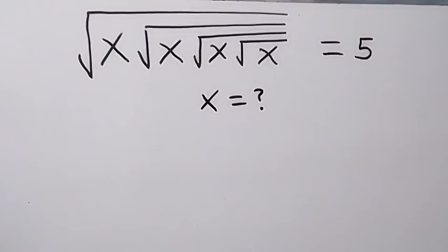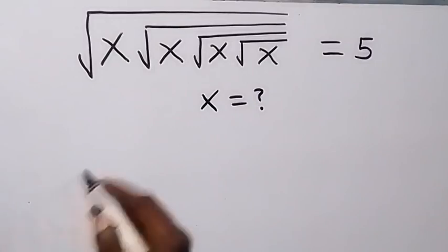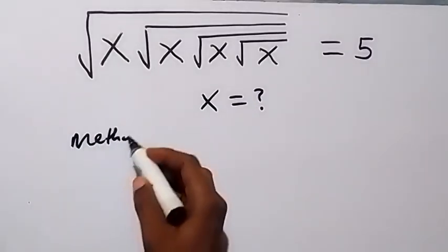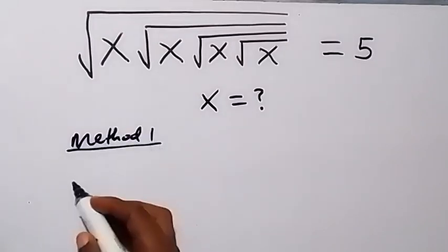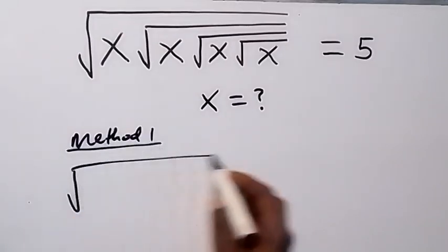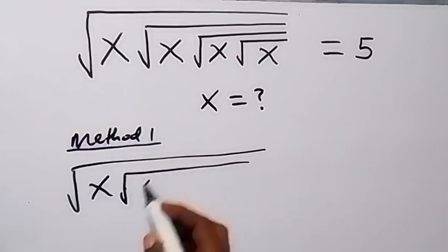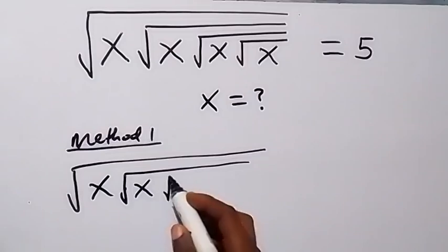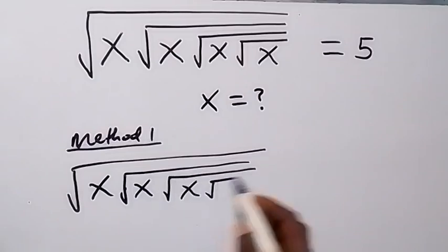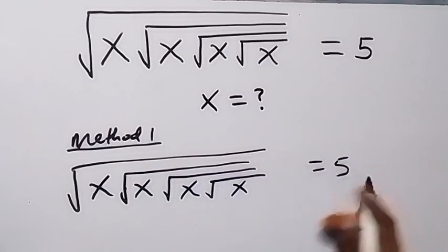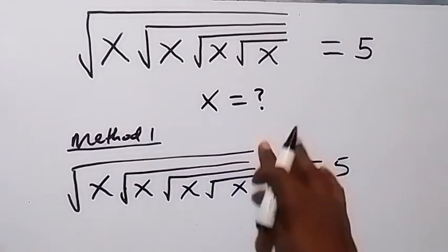Hello, you are welcome. We will solve this nested square root math problem using two methods. What we are given is the square root of x, then square root of x, also square root of x, then square root of x, which is equal to 5. From here, let's square both sides.